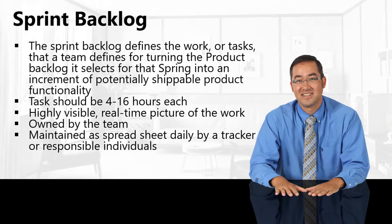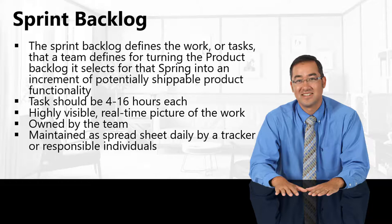The sprint backlog defines the actual work and activities that a team selects from the product backlog for that sprint, turning it into an increment of potentially shippable product functionality. The development team works on a task and turns that information into a fully functional product. Each task should be about 4 to 16 hours. The sprint backlog provides a highly visible, real-time picture of the work, owned by the team.